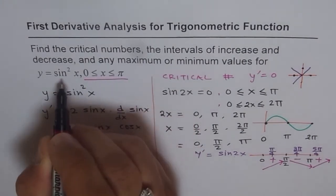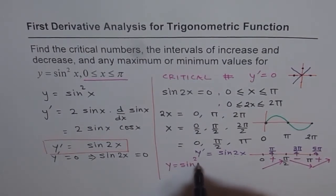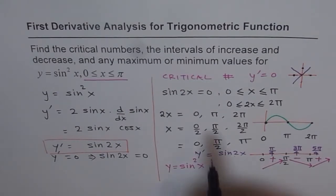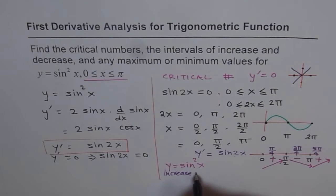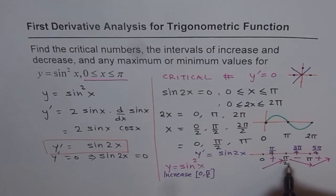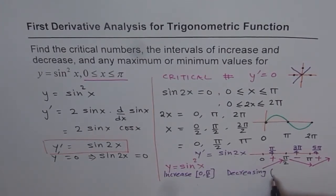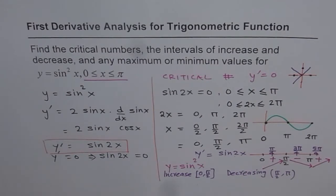Since we are working with y equals sin squared x, we can write the intervals of increasing and decreasing as: increasing on (0, pi over 2), and decreasing on (pi over 2, pi). At these critical points the derivative is zero, so these are turning points.